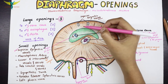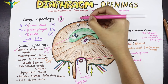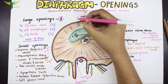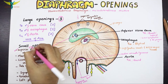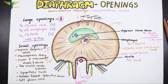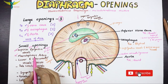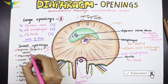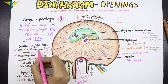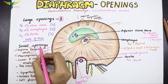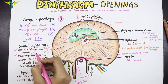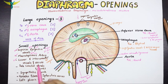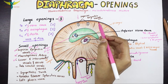The superior epigastric vessels pass through the space of Larrey, which is present between the slip of the xiphoid process above and the seventh costal cartilaginous slip of the diaphragm. The musculophrenic artery pierces the diaphragm at the level of the ninth costal cartilage, while the superior epigastric vessels are at the seventh costal cartilage level.